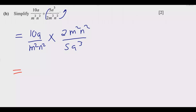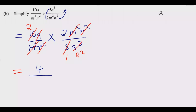When dividing fractions, you introduce multiplication and swap the denominator and numerator. Then simplify: 5 into 10 is 2, a into a³ leaves a², m into m² leaves m, and the n terms cancel. The result is 4 over a². Once you do this you get the two marks. The trick is converting the division into multiplication and then simplifying the powers.